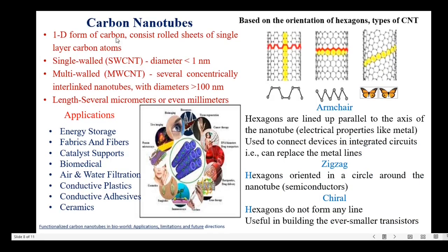The next one is carbon nanotubes — a one-dimensional form of carbon consisting of rolled sheets of single layer carbon atoms. Based on structure, carbon nanotubes are of two types: single-walled carbon nanotubes and multi-walled carbon nanotubes. A single-walled carbon nanotube diameter is about 1 nanometer. Multi-walled carbon nanotubes have a diameter of more than 100 nanometers and have several concentrically interlinked nanotubes. The length of multi-walled carbon nanotubes can be several micrometers or even millimeters.